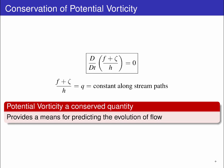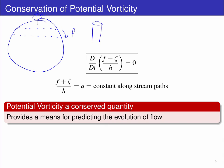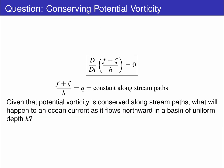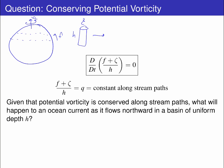The potential vorticity is a property of the flow that is conserved along stream paths. For a fluid to change f (its latitude), zeta (its spin), or H (its height), there must be a compensating change in one or both of the other terms. This principle provides a convenient means for predicting the time evolution of the flow. To finish off, consider what will happen to a parcel of water as it flows northward to larger f in a basin of uniform depth H.